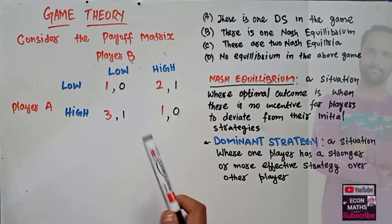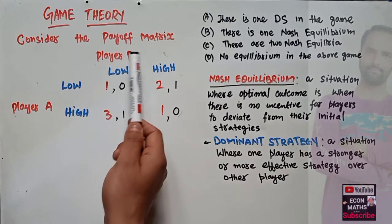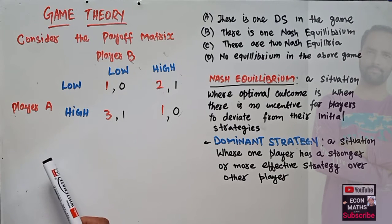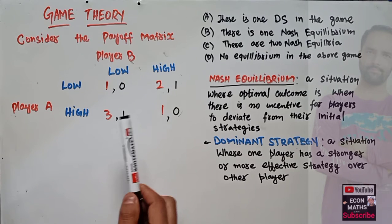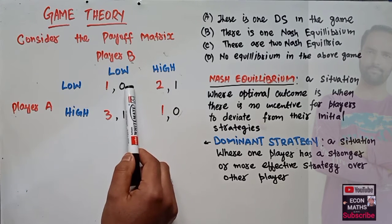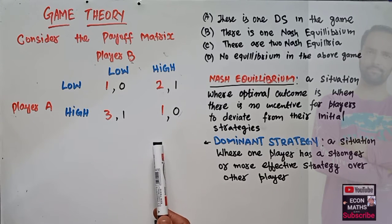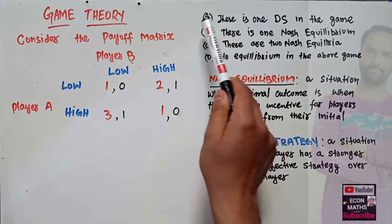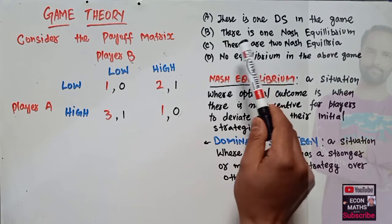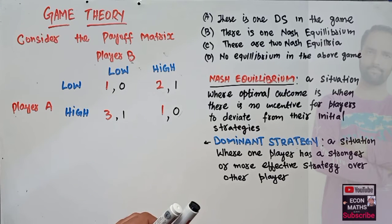In this video we will solve a question on game theory. The question considers the payoff matrix for two players, Player A and Player B. Each player has a strategy — low or high — that they will play. The first element of each cell is the payoff for Player A, and the second element, denoted in black, is the payoff for Player B. We are asked to choose the correct option: one dominant strategy, one Nash equilibrium, two Nash equilibria, or no equilibrium.